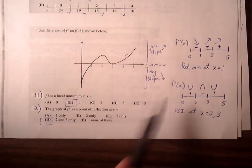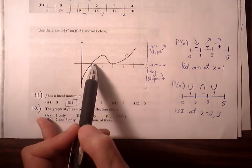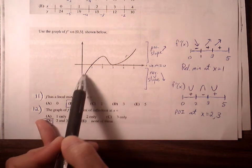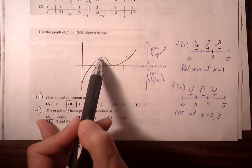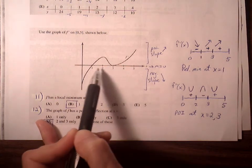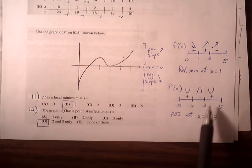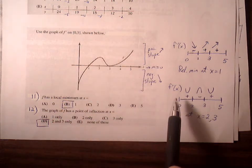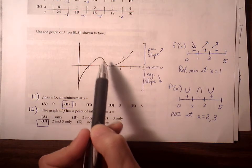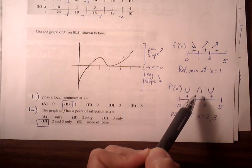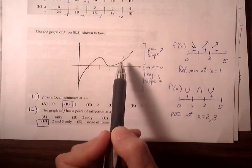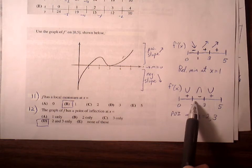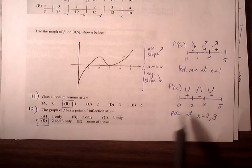Part 12 asks about points of inflection. When looking at the f prime graph, the peaks and valleys indicate where points of inflection are on the original function. The slope of f prime indicates concavity: f prime rising means concave up; f prime decreasing means concave down. Critical points of f prime are at x equals 2 and 3. Between 0 and 2, f prime is rising — concave up. Then f prime decreases — concave down. Then f prime rises again — concave up. Since concavity changes at 2 and 3, those are points of inflection.